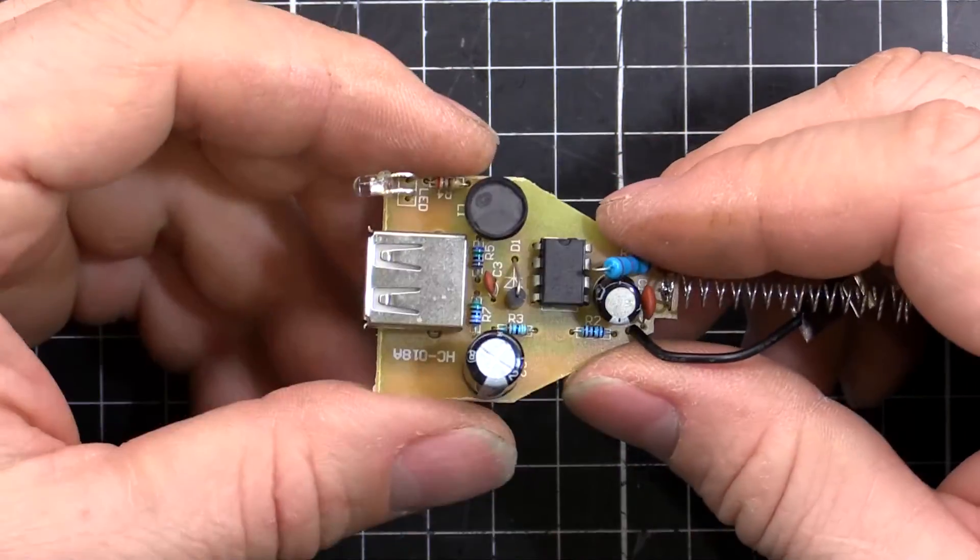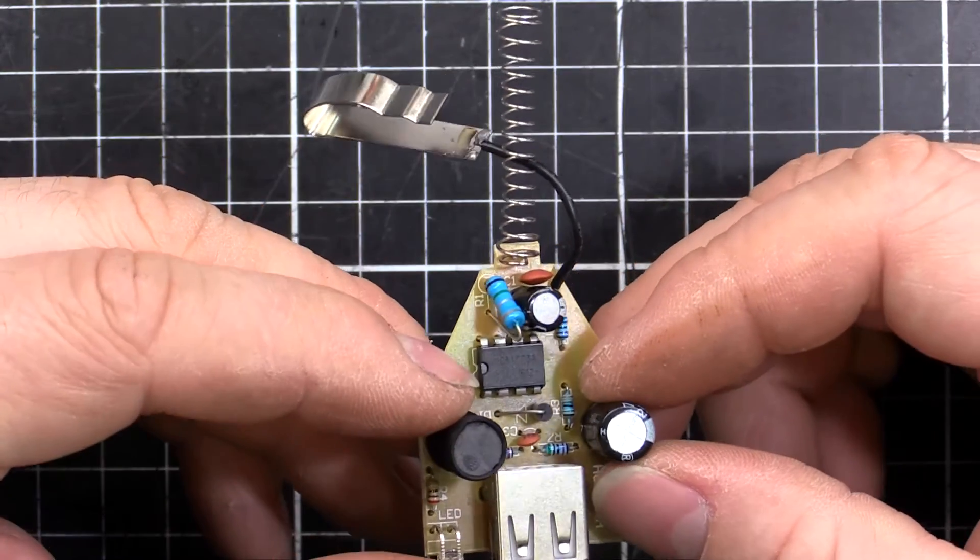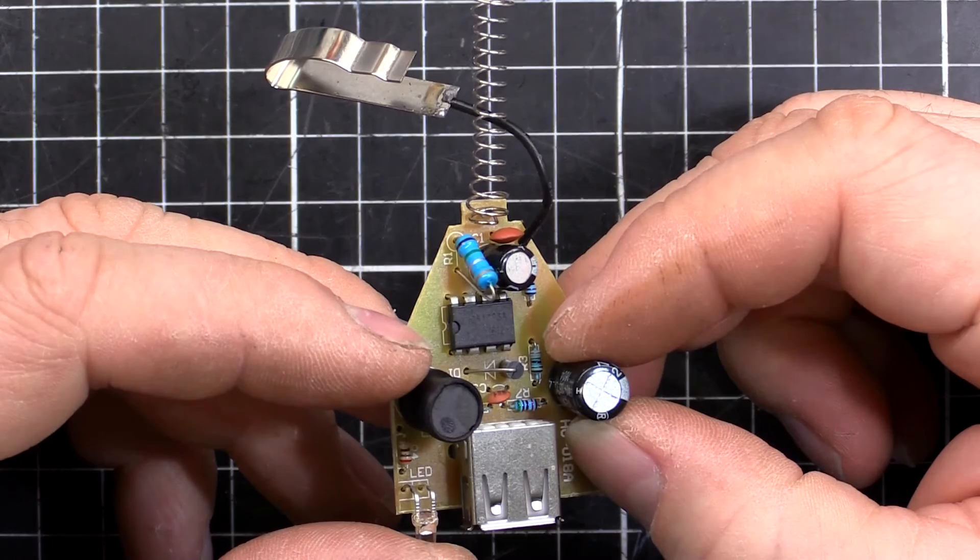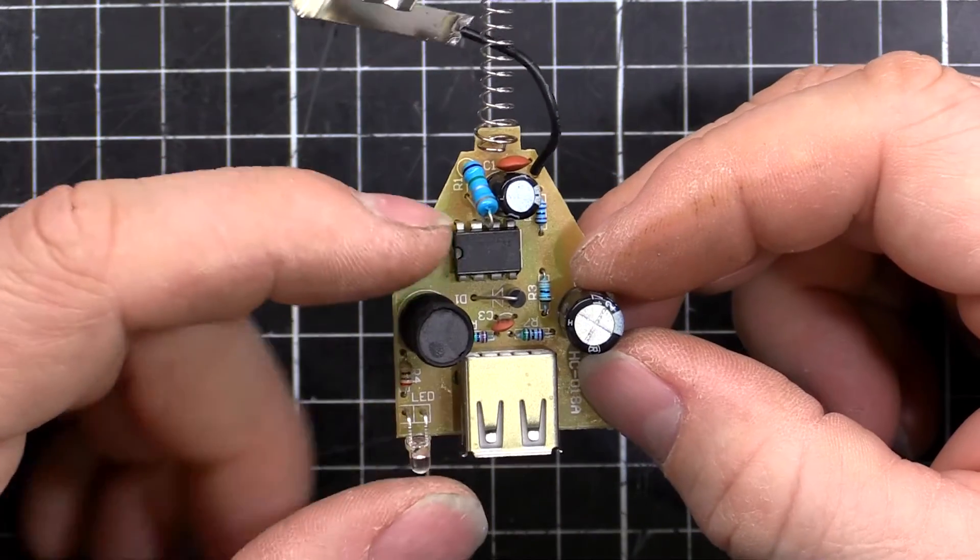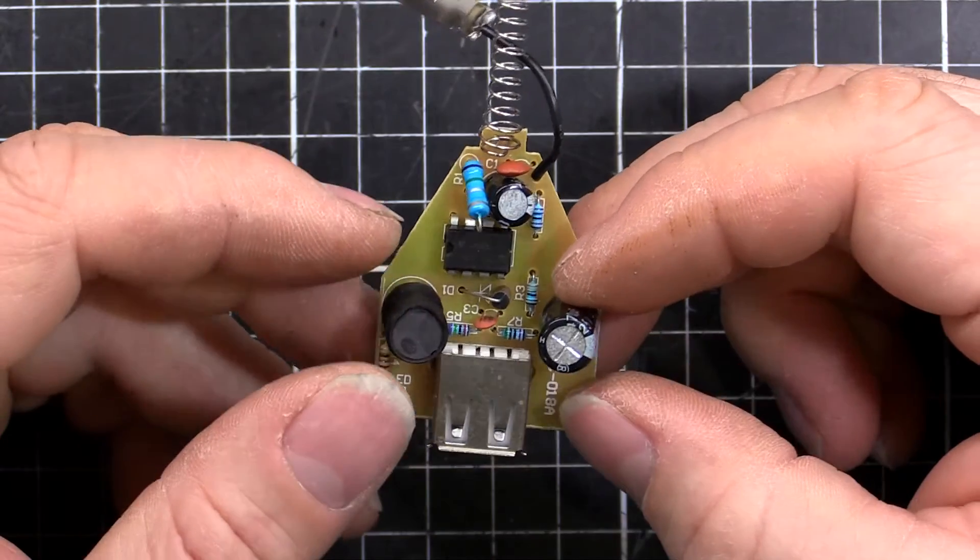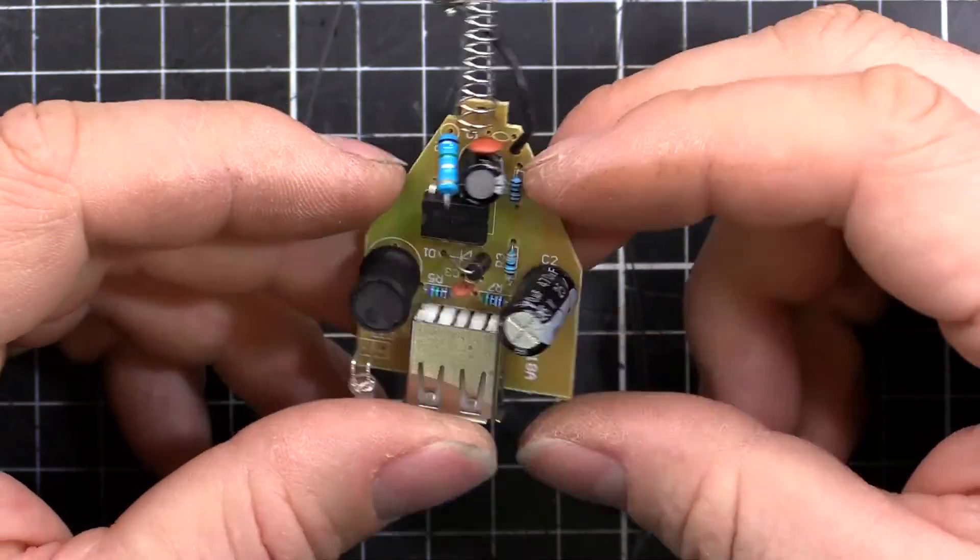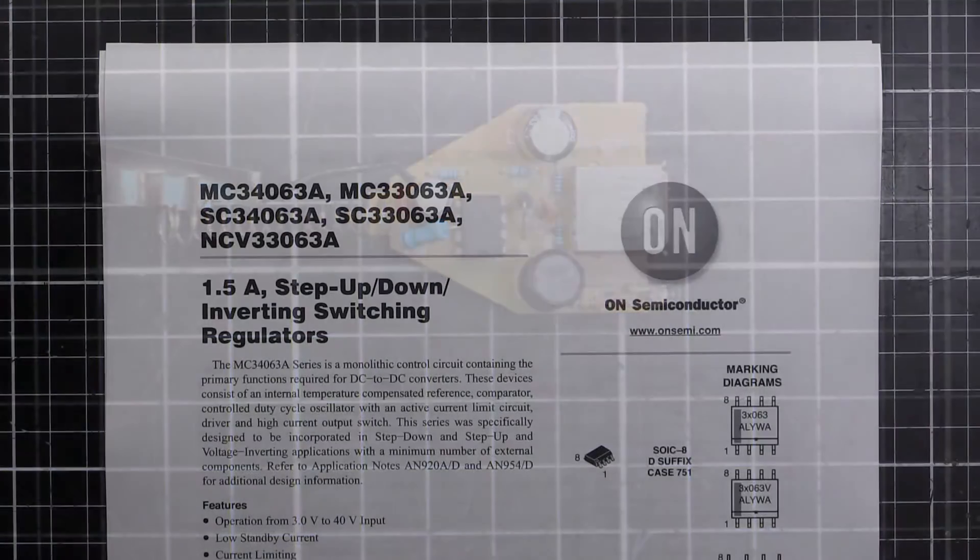One active component in the middle there, that is a MC31063A. So let's look at a data sheet for that, see what that one is. It's going to be like a little buck converter control IC. And I'll also reverse engineer the circuit, we'll figure out how this thing works.